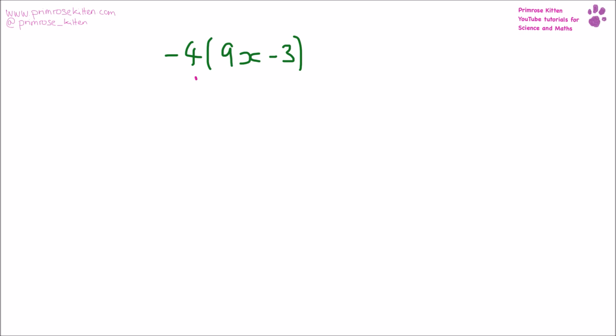Here we have minus four which we need to times by 9x, and minus four which we need to times by minus three. So minus four times 9x gives us minus 36x. Minus four times minus three gives us plus 12.